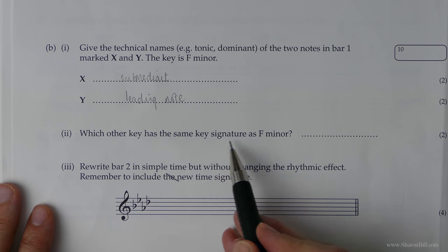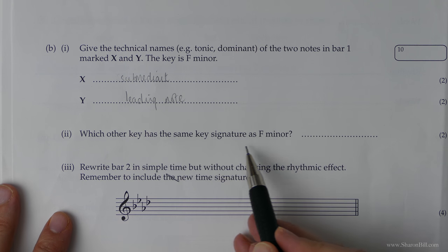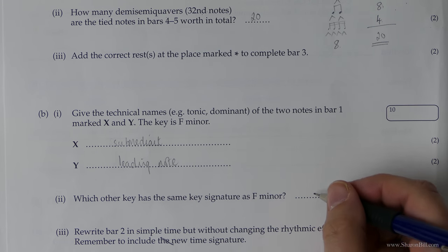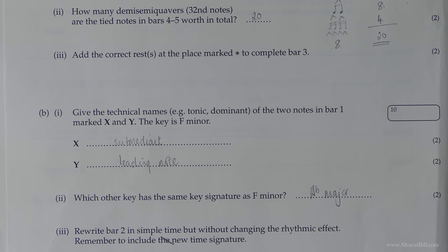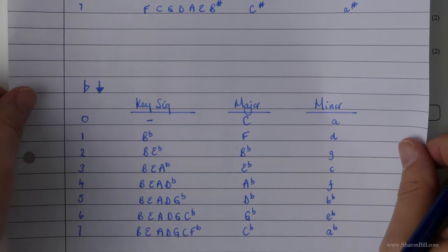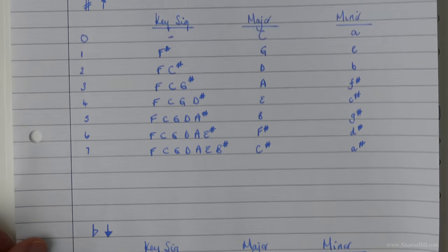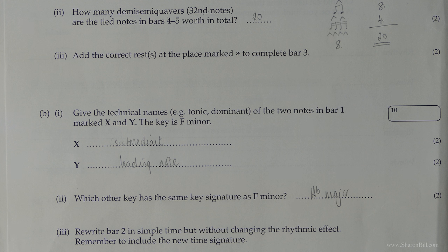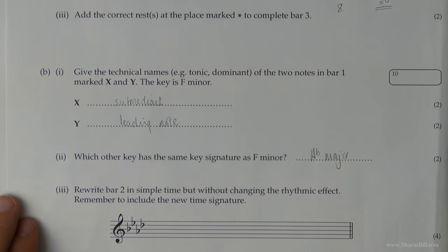Which other key has the same key signature as F minor? So we know that F minor is related to A-flat major. I always find it helpful before you start, and I would do this in the exam, just write out your circle of fifths. There's the link in the video in the description below. And I would always write out your key signatures and related keys first. And then you've done all the thinking once. You don't need to keep racking your brains and thinking of it again.